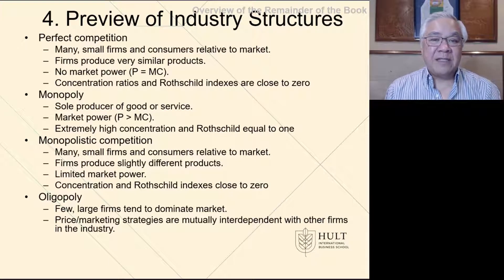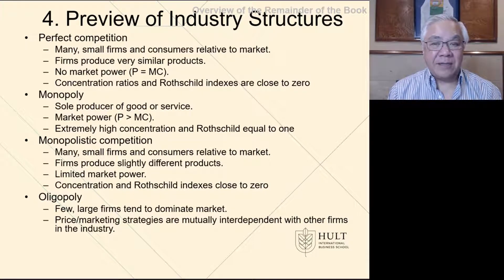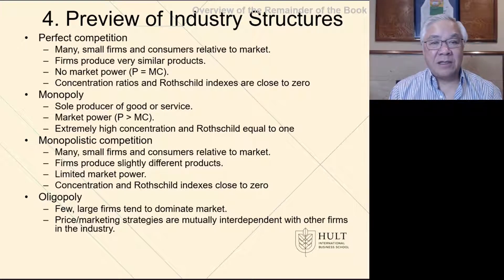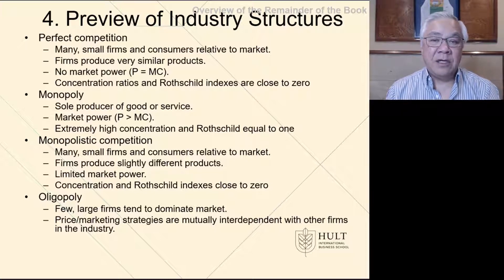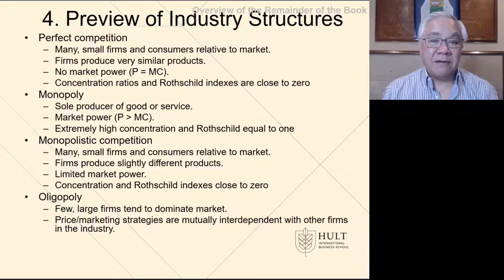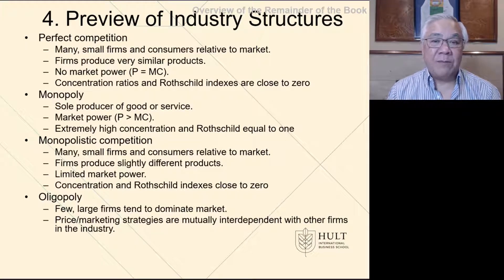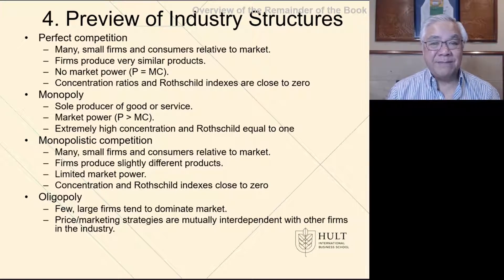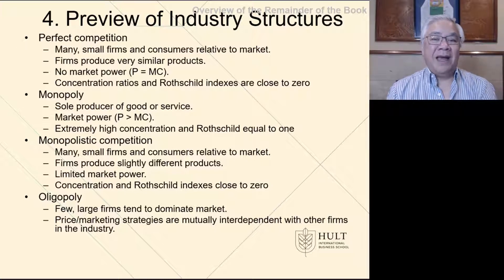The last item, which we'll devote a fair amount of time to after next chapter, is oligopolies, where a few large firms dominate the market. The classic example is OPEC and how they can set the price and agree on production standards to set the world price of oil. Price and marketing strategy are mutually interdependent between the firms in this industry. OPEC and other cartels wield enormous power over their industries.